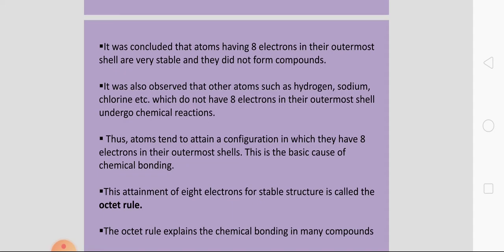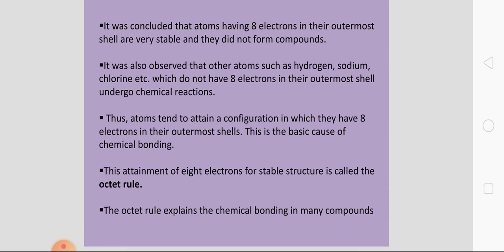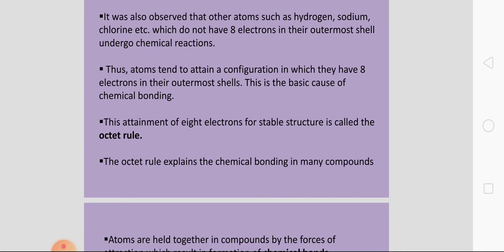It was also observed that other atoms such as hydrogen, sodium, chlorine, etc., which do not have 8 electrons in their outermost shell, undergo chemical reactions. जिनके outermost shell में 8 electrons नहीं होंगे, वो chemical reactions करेंगे। Thus, atoms tend to attain a configuration in which they have 8 electrons in their outermost shells. This is the basic cause of chemical bonding, and this attainment of 8 electrons for a stable structure is called the octet rule.